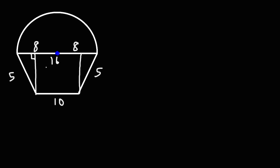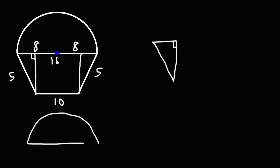Let's focus on the triangles — both of these are right triangles. Notice that this is 10, which means this portion is 10. The total of this segment is 16. Since the figure is symmetrical, if this part is 10 and the entire width is 16, the remainder must be 6. Splitting 6 in half means each side is 3.